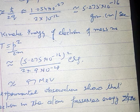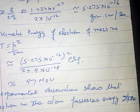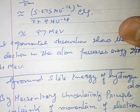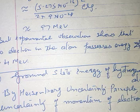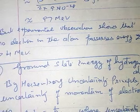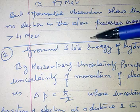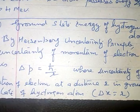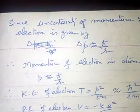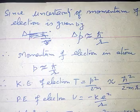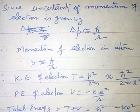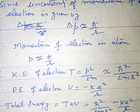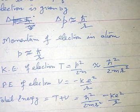The second application is the ground state energy of the hydrogen atom. By the Heisenberg uncertainty principle, the uncertainty in momentum of the electron is delta p equal to h-cross upon r. Since the uncertainty in momentum of the electron is delta p equal to h-cross upon r, the momentum of the electron in the atom is p equal to h-cross upon r. The kinetic energy of the electron will be p square upon 2m, which is approximately equal to h-cross square upon 2m r square.